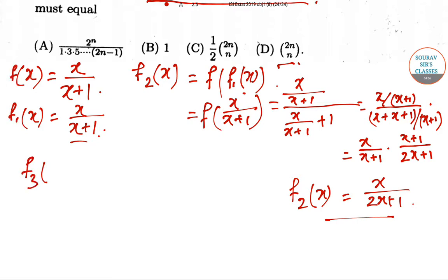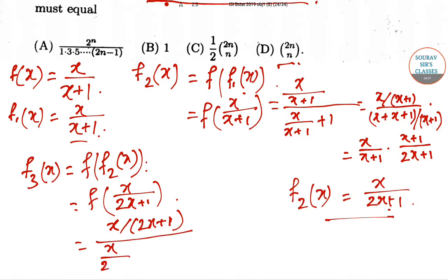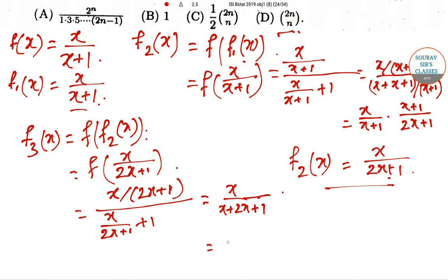To find f3(x), it is again f of f2(x), that is equal to f of x by 2x plus 1. Working this out in the same way, we are getting x divided by x plus 2x plus 1, giving us f3(x) equal to x by 3x plus 1.